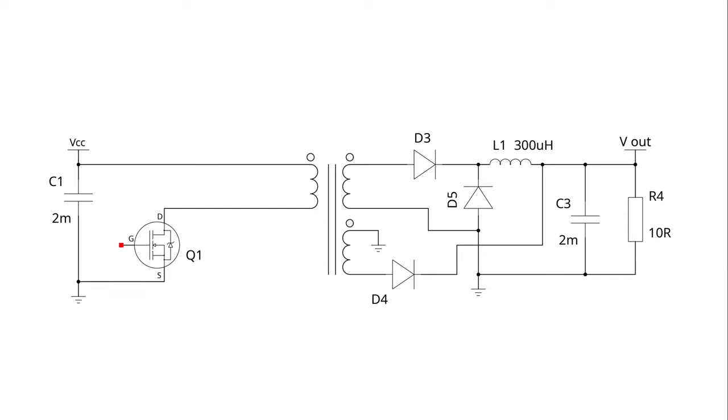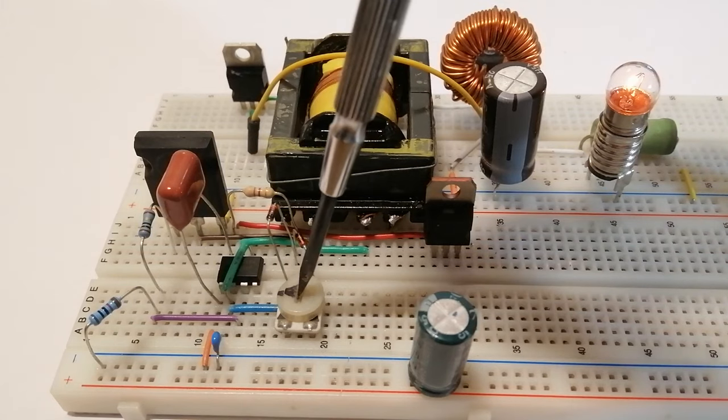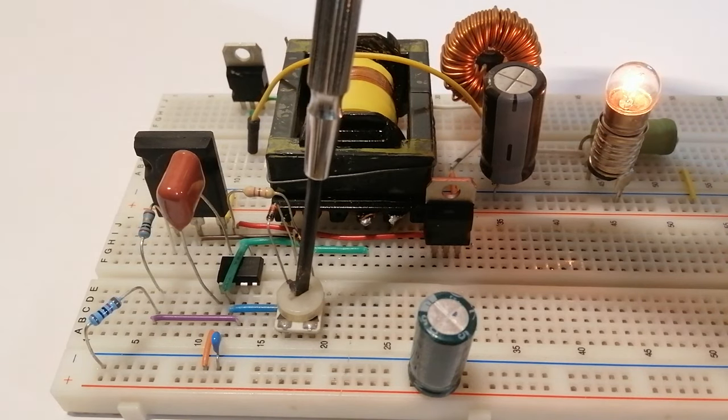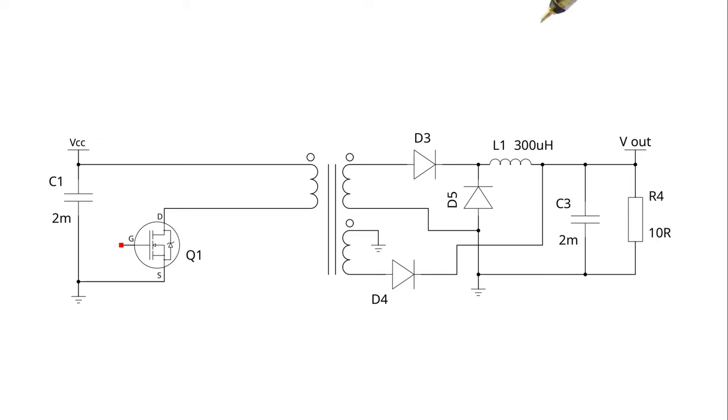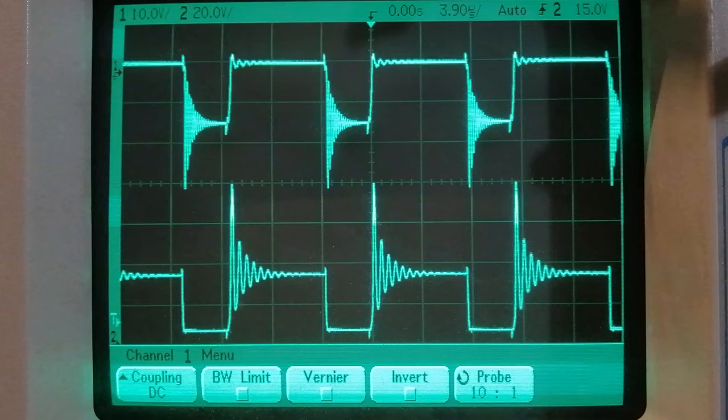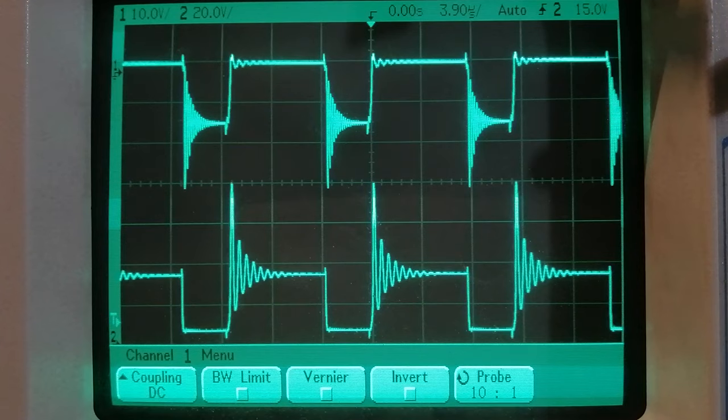So in general if we try to apply this with a step down topology, it's always going to limit a lot the duty cycle that we can use. And in fact if we probe again the drain source voltage and the voltage before the diode, we can see that it never finishes demagnetizing the coil.